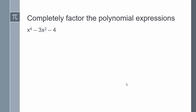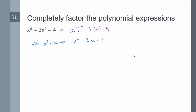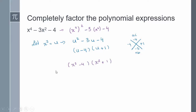In this example, we are to completely factor the polynomial expression x to the power of 4 minus 3x squared minus 4. This can be written as a quadratic by letting u equal x squared, replacing x squared with u to get u squared minus 3u minus 4. I need two numbers that multiply to negative 4 and add to negative 3. Those are negative 4 and positive 1. So it factors into u minus 4 times u plus 1. Replacing u with x squared gives us x squared minus 4 times x squared plus 1.